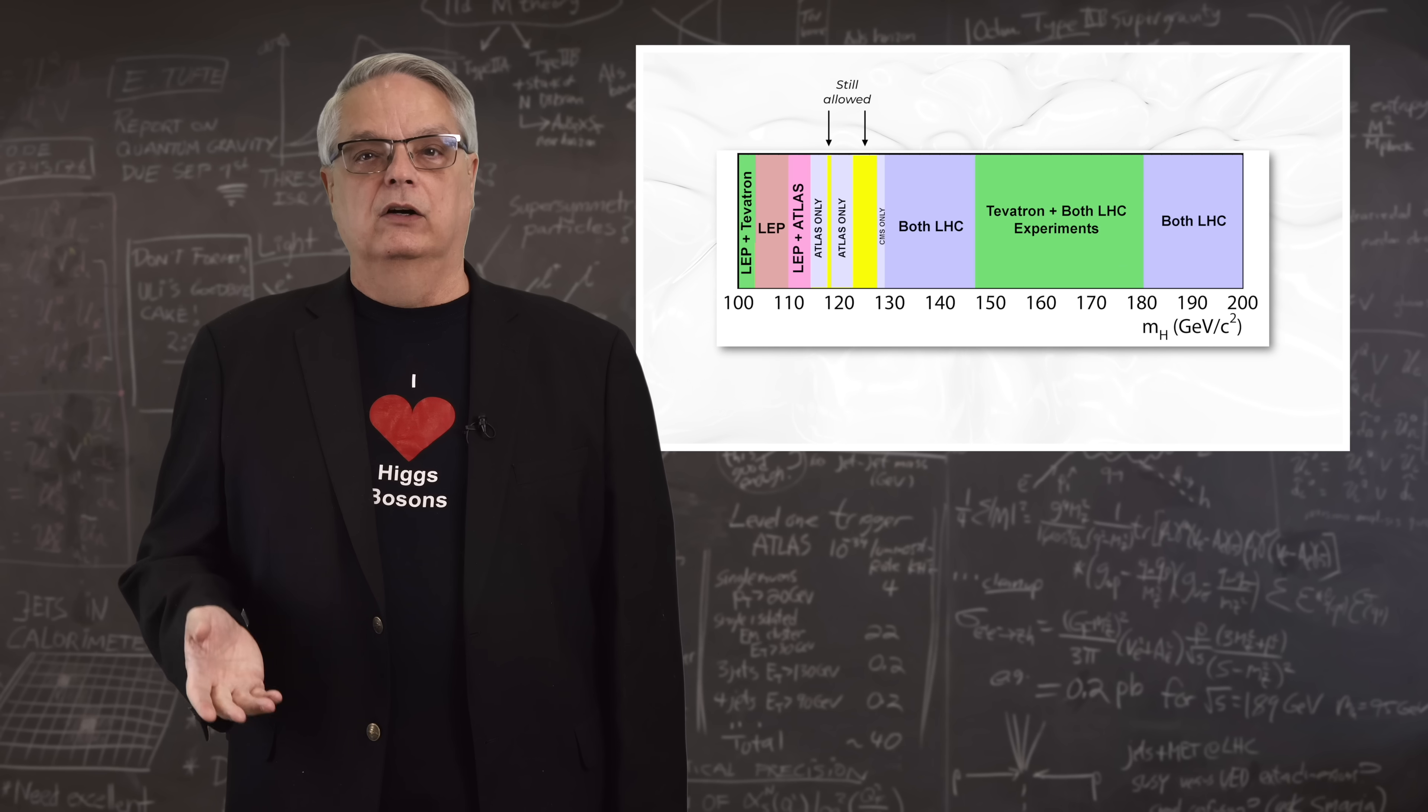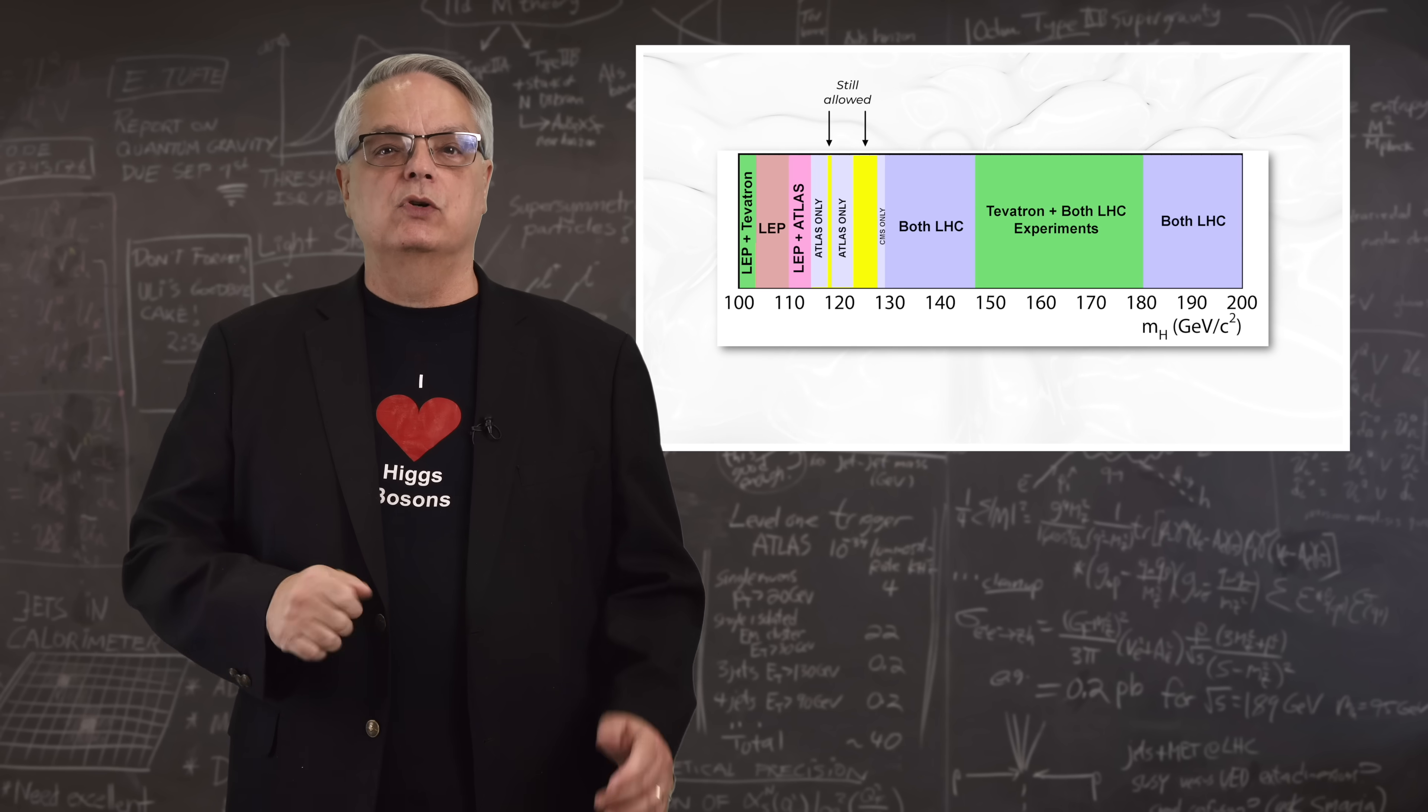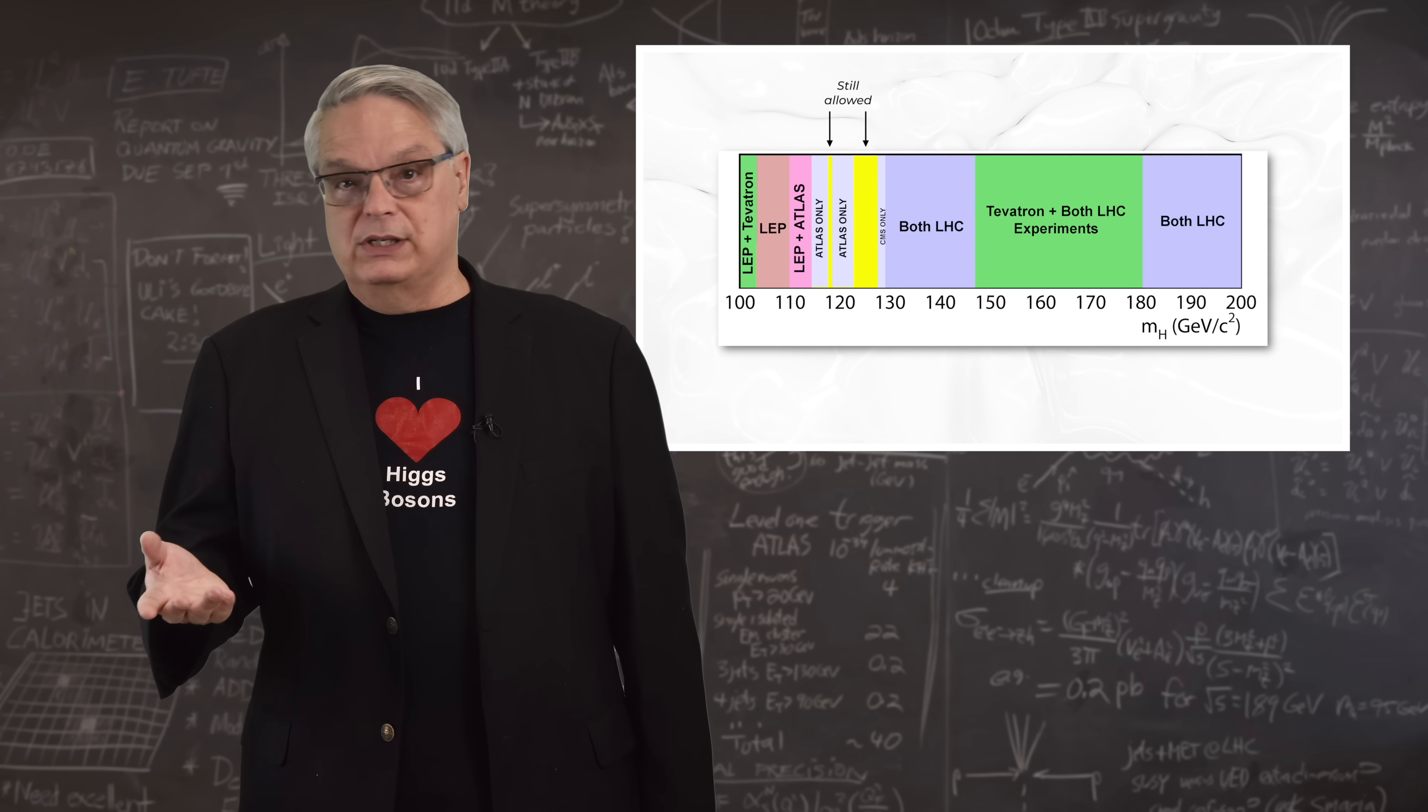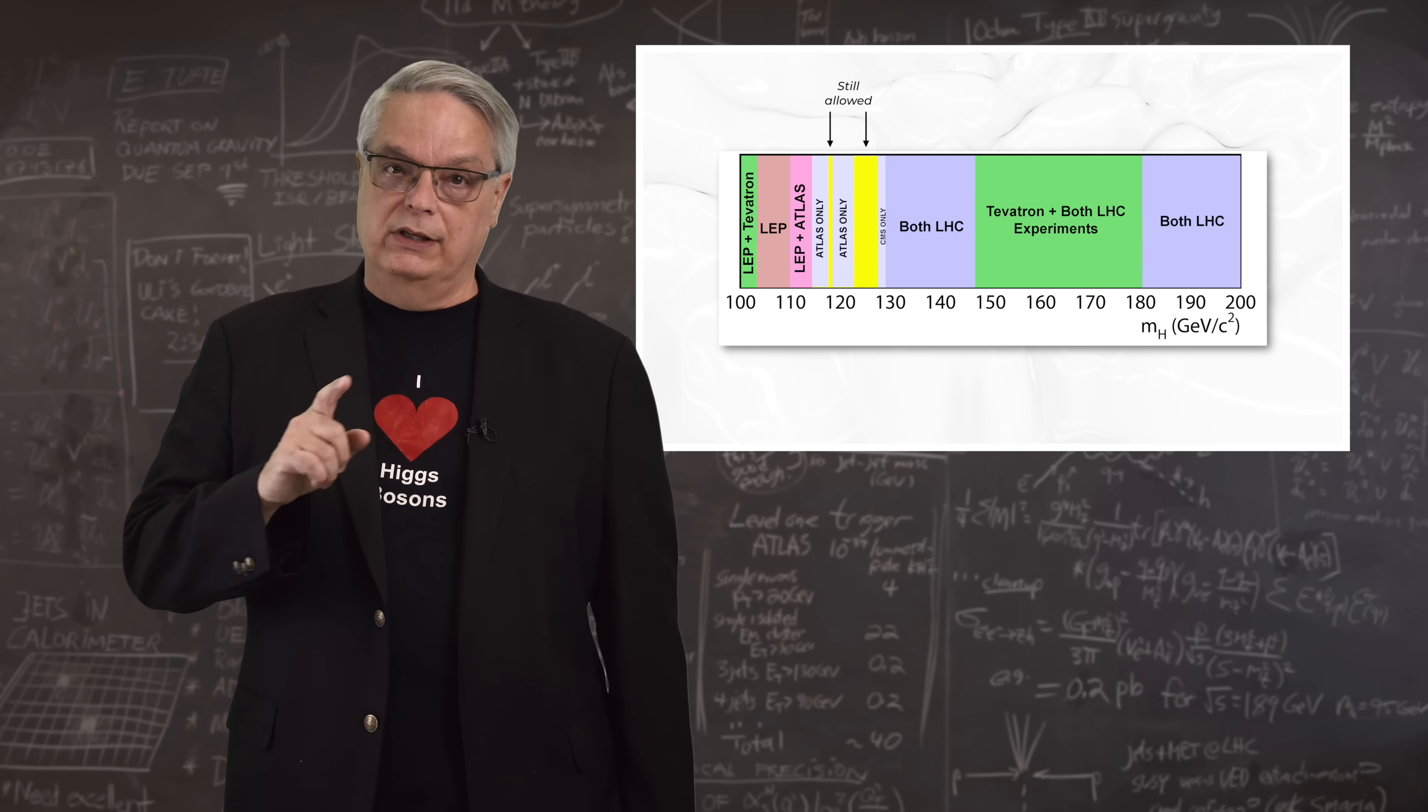Furthermore, the yellow, which was the range where the Higgs boson could still exist, was getting very small. But still, nobody had found the Higgs boson yet.